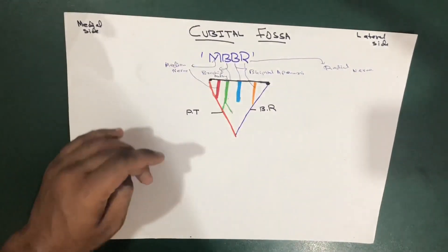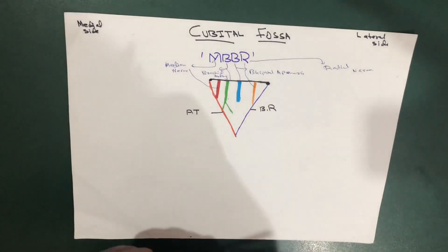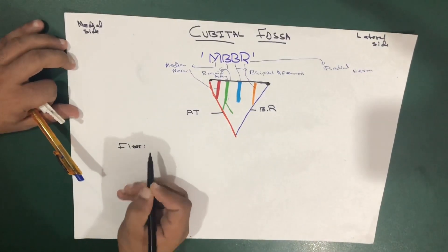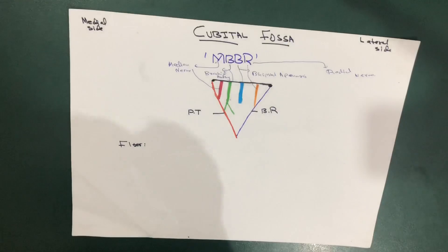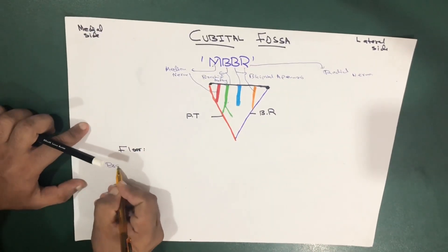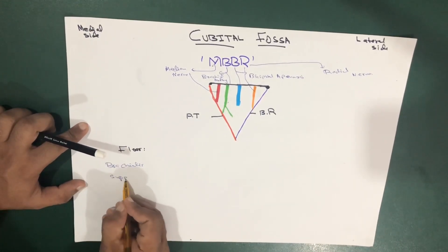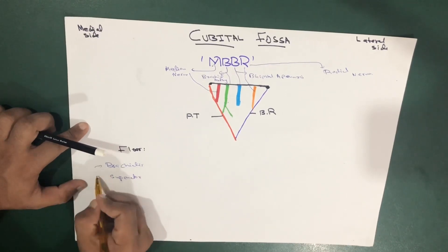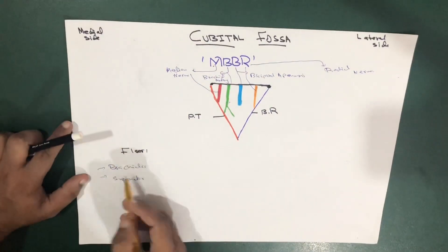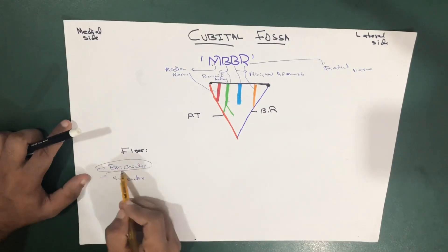Now let's talk about the roof and floor of the cubital fossa. The floor is formed by two muscles: the brachialis muscle (medial) and the supinator muscle (lateral). These two muscles form the floor of the cubital fossa from medial to lateral.